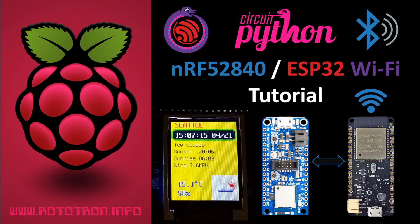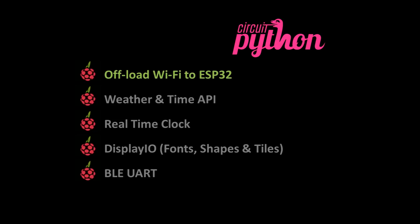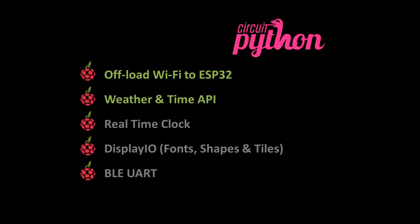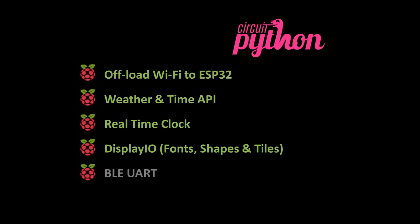This is my fourth CircuitPython tutorial. If you're just getting started, I recommend you watch the previous episodes to learn the basics. This video will cover how to wire an ESP32 to an NRF52840 and then control it via SPI to provide Wi-Fi access. This will be used to return weather and time data from free online APIs. A real-time clock will be set up and initialized using the correct internet time and zone. The DisplayIO library will be explored in more depth including fonts, shapes, and tiles. And Bluetooth Low Energy will be used to afford remote control via a mobile phone.